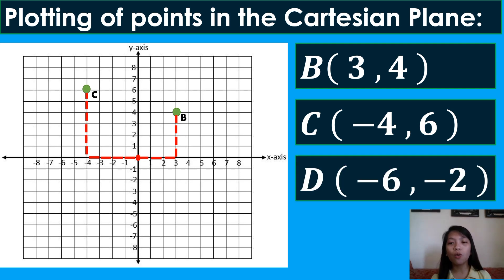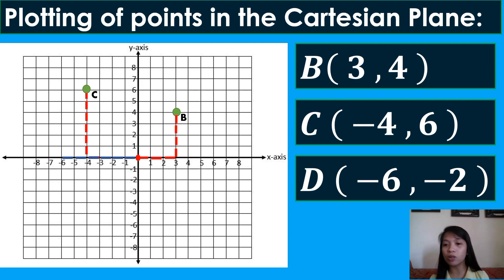Next, we plot point D with coordinates (-6, -2). From the origin, we move 6 units to the left: 1, 2, 3, 4, 5, 6. Since our y-coordinate is also negative, we move 2 units downward: 1, 2. That is the location of point D — in Quadrant 3.